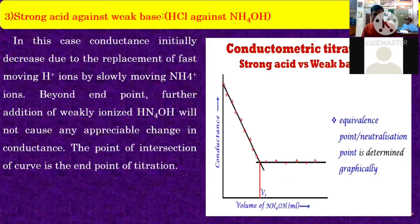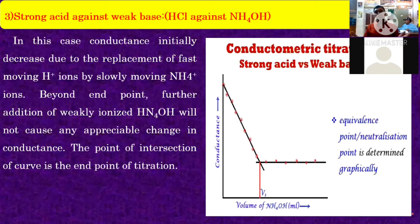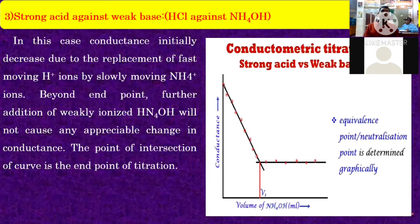Next, strong acid against weak base. Here, take a mineral acid against weak base NH₄OH. Both dissociate, but the rate of dissociation is different for each. In this case, conductance initially decreases due to replacement of fast-moving H⁺ ions by slowly moving NH₄⁺ ions.